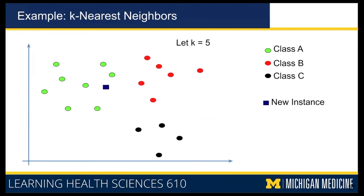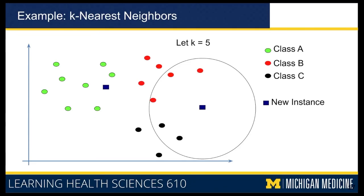It depends on where those points are. In the previous case the point was in the midst of green points, but what if the new instance is somewhere else? If you apply the same circle as before, no points come within that circle. If you had set a fixed distance threshold for neighbors and find no points, you have to expand your definition of what a neighbor should be — your circle has to be larger. When you expand the circle you can find five neighbors, but you go farther. In this case there are three red neighbors and two black neighbors, so your label would be red. You can still assign a label, but your affinity to your neighbors is lower because you had to go farther.